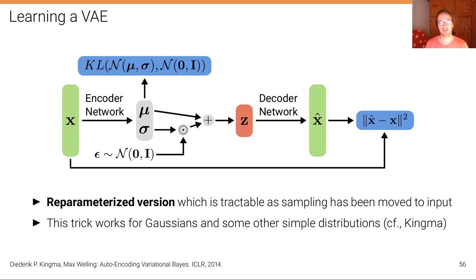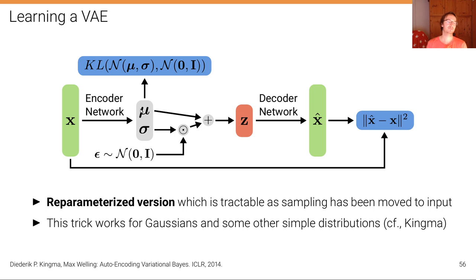This trick works for Gaussians and some other simple distributions like exponential family distributions. More details are in the Kingma and Welling paper for those interested.